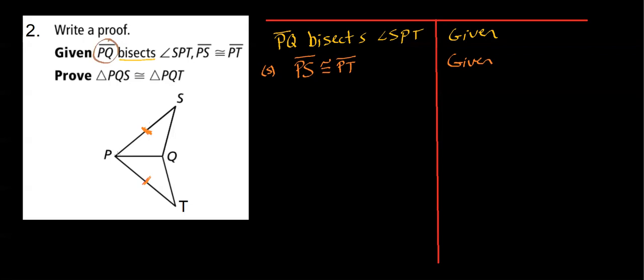if line segment PQ is bisecting angle SPT, so angle SPT is S to P to T, so that's right here. So if PQ is bisecting angle SPT, this segment is splitting this large angle into two congruent angles.